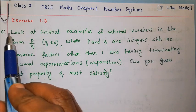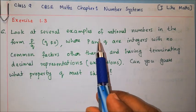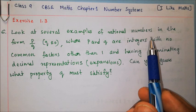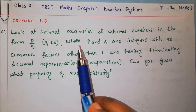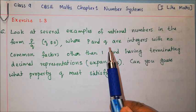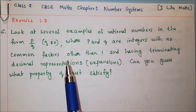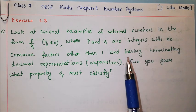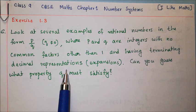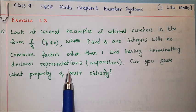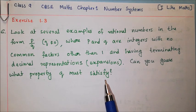Exercise 1.3, question 6. Look at several examples of rational numbers in the form p by q, where q is not equal to 0, and p and q are integers with no common factors other than 1, having terminating decimal representations. Can you guess what property q must satisfy?